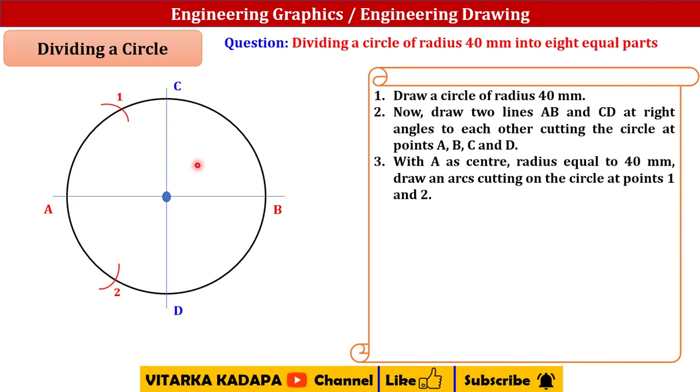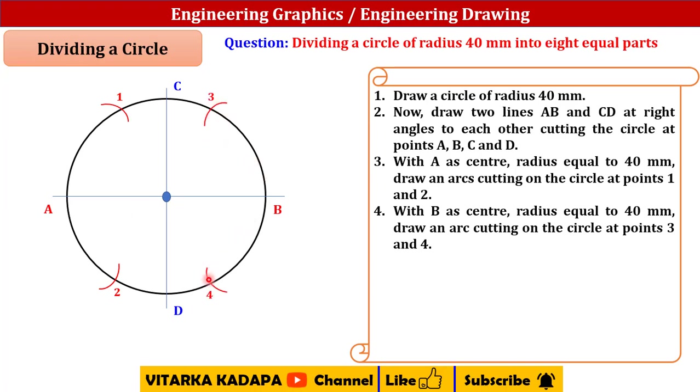Now with B as a center, with the same radius equal to 40 mm, draw an arc at the third point. Similarly draw an arc at the fourth point. So two points with A as a center, two arcs with B as a center, two arcs.